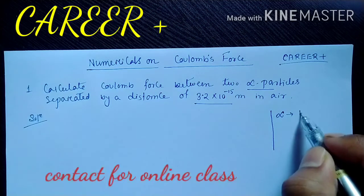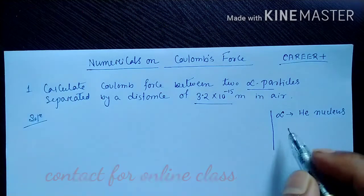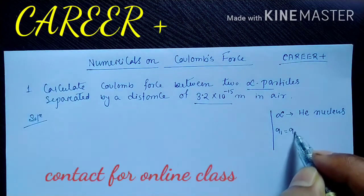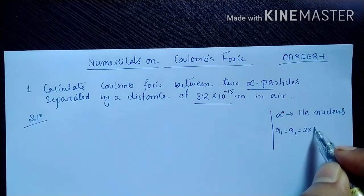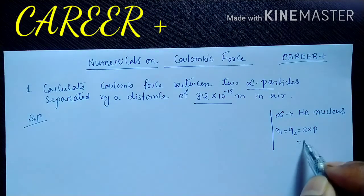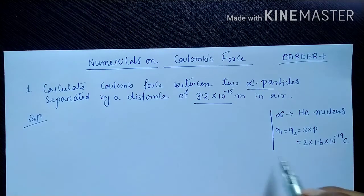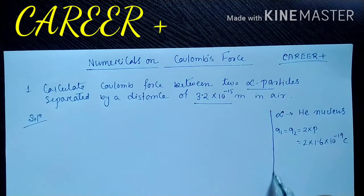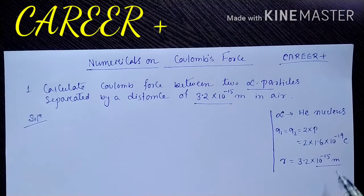An alpha particle is nothing but a helium nucleus. That means the charge on each alpha particle is twice the charge of a proton — that is 2 × 1.6 × 10⁻¹⁹ coulomb. The separation distance r is given as 3.2 × 10⁻¹⁵ meter. Remember, 10⁻¹⁵ meter is also known as a Fermi.